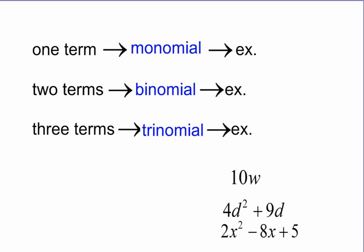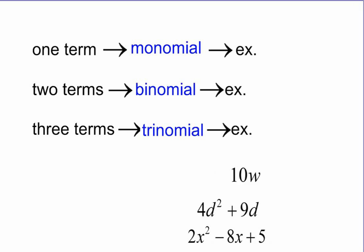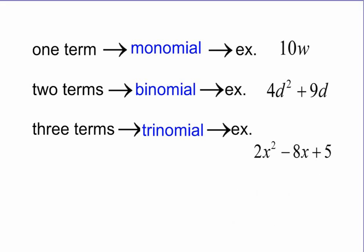And we got three examples now here and here and here of these different kinds of polynomials. So a monomial has one term. Well, which of these things here has one term in it? It's this one right here. 10w is an example of a term, and there's just one term that's there. Two terms. Well, 4d squared plus 9d is an example of a binomial. And finally, 2x squared minus 8x plus 5 is an example of a trinomial.